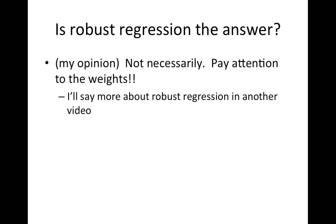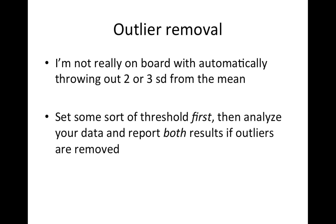Is robust regression the answer? Again, in my opinion, not necessarily. When using robust regression you really have to pay attention to the weights. I was helping someone studying depression scores, and all of the highly depressed subjects were being downweighted to the point they weren't effectively included — which changes the study population your results apply to. I'm also not on board with automatically throwing away subjects that are outliers. I'd run with and without them, try to figure out why they're outliers, and if you set a threshold, set it before you look at your data — then report both results.